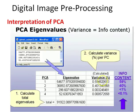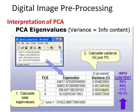Looking at this cumulatively, just in the first two principal components bands, I've got over 99% of the total spectral variability already accounted for. By the time I get to the third band, there's less than 1% remaining. So if I were to use this for my analysis, I may only need two bands to account for all of the variability in my image.